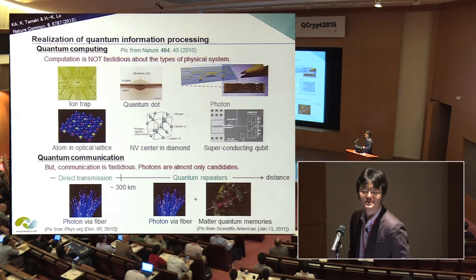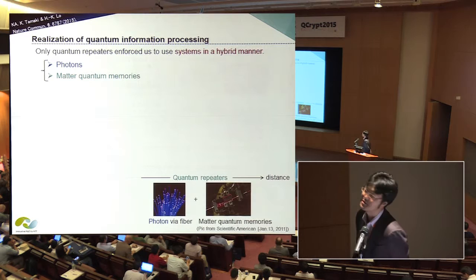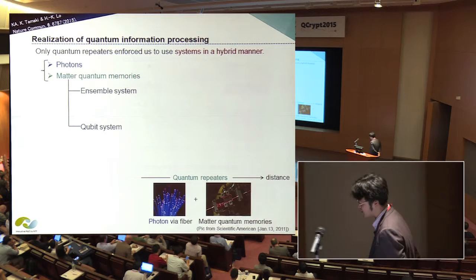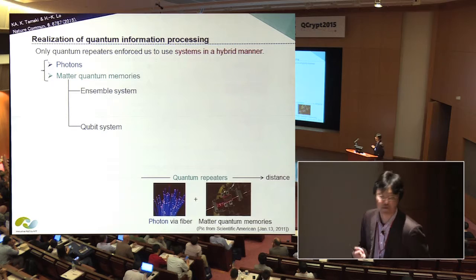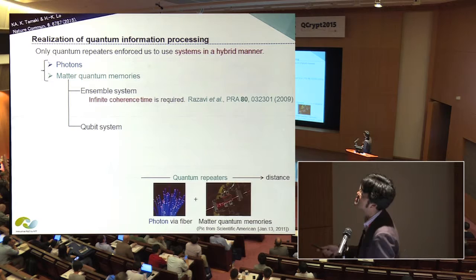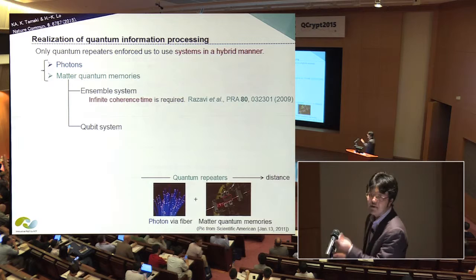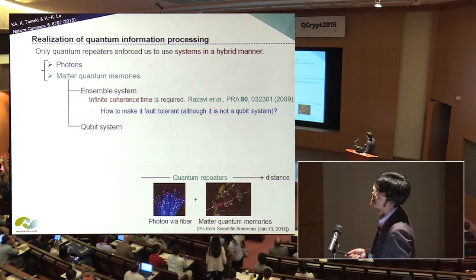The only quantum repeater theory enforces us to use different physical systems at the same time — namely, photons and matter quantum memory in a hybrid manner. If we see the realization of matter quantum memory, we can find two types of systems: one is an atomic ensemble system; the other requires matter qubits such as NV center in diamond, quantum dot, and so on. Unfortunately, if we try to use atomic ensemble quantum memory, infinite coherence time is required according to recent theory. In order to perform a polynomial scaling quantum repeater, infinite coherence time is needed.